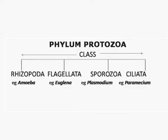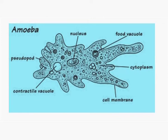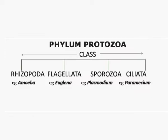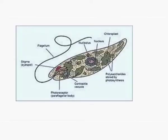Phylum Protozoa is divided into four classes. Class Rhizopoda includes all those organisms which move about with the help of pseudopodia — example is Amoeba. Class Flagellata, as the name suggests, flagella means whip-like, and this class includes all organisms which move about with the help of flagella.